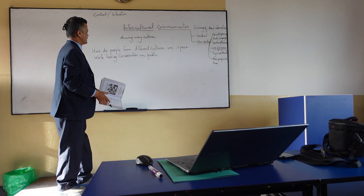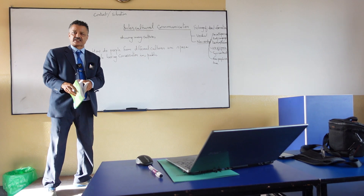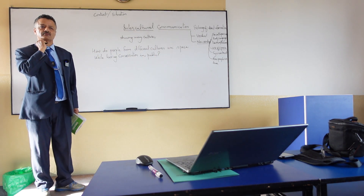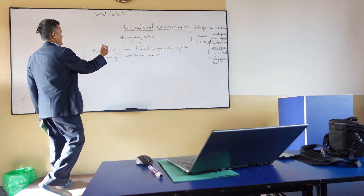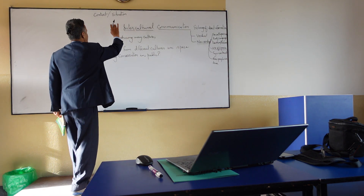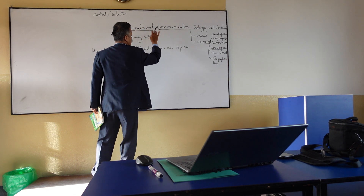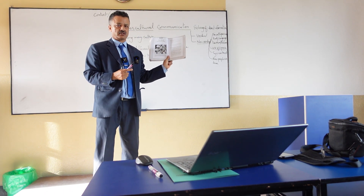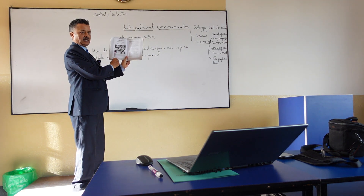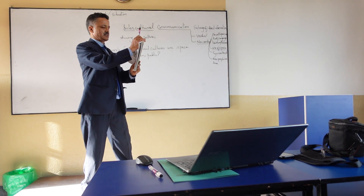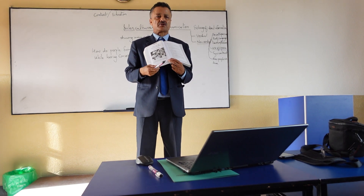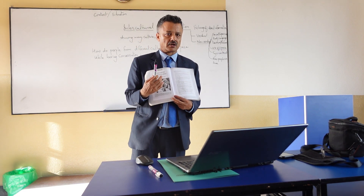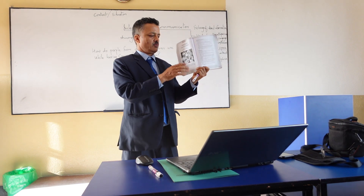The question this essay answers is: how do people from different cultures use space while having conversations in public? This is the topic of the essay. If you see the picture in the textbook, you get a better idea about the theme — you can see a fair-skinned lady and a lady of color, probably from two different cultures, perhaps European and African.